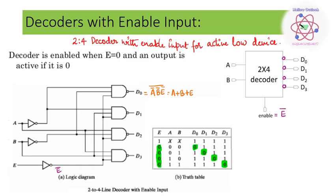In the decoder schematic the output is bubbled, and in the logic diagram I will provide the enable input with E equal to 0, or I can use a NOT gate. When writing the expressions for outputs d0, d1, d2, and d3, I need to mention the enable pin.